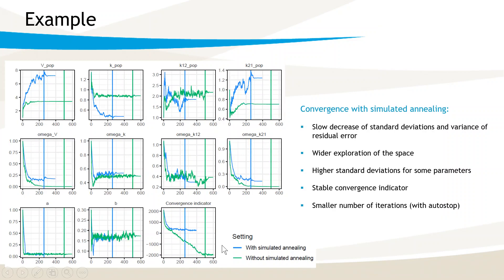We can now see the case where the autostop is enabled, with the switch to the smoothing phase displayed in blue with the simulated annealing and in grey without the simulated annealing. With the simulated annealing, the autostop criteria is triggered after 256 iterations, while without the simulated annealing, the algorithm reaches the maximum number of 500 iterations without triggering the autostop.